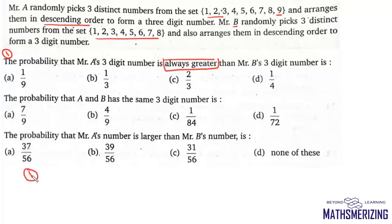Now for this first case, A's number has to always be greater. The key difference between this set and that set is that A's set has 9. So if 9 is chosen by Mr. A in one of the 3 numbers, then in that case the number formed by Mr. A will always be greater than the number formed by Mr. B. Now in how many ways can 9 be selected? We need 3 numbers, out of which 1 is already selected as 9. So from the remaining 8 we select any 2, divided by 9C3.